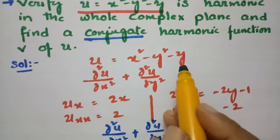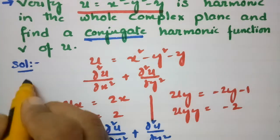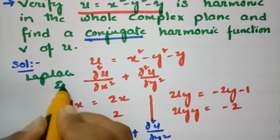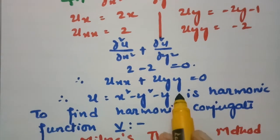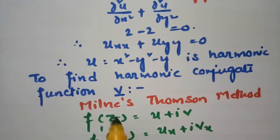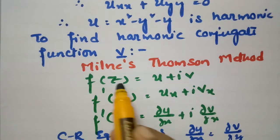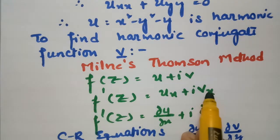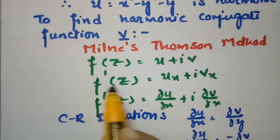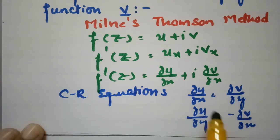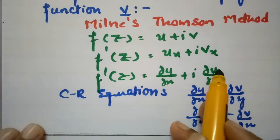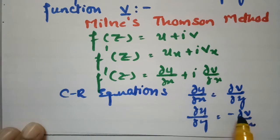All three values — u, v, and the full analytic function — came at once using the Milne-Thomson method. It is very simple: u is given, we show the Laplacian equation equals zero to confirm u is harmonic. Then to find the conjugate function v, we use f'(z) = ∂u/∂x + i(-∂u/∂y) derived from the CR equations.